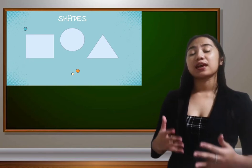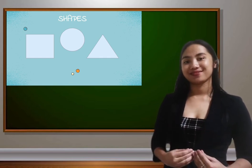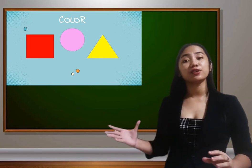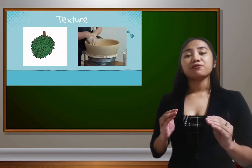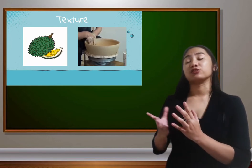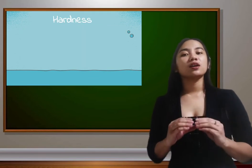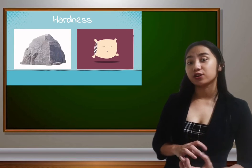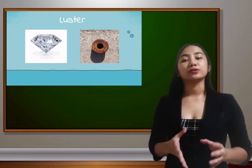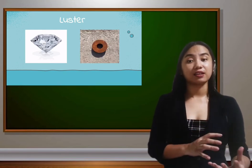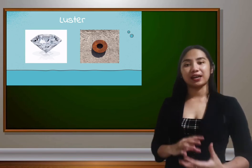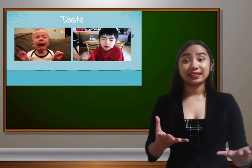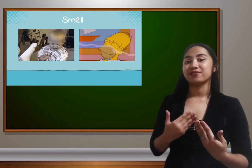When we talk about shapes, we have our basic shapes, and an object can also be irregularly shaped. When we talk about color, we have different colors — it can be pink, green, red, or whatever you observe. When we talk about texture, it refers to how an object feels — it can feel smooth or rough. When we talk about hardness, it refers to how hard it is to bend or change the shape of an object, so it can be hard or soft. Then we have luster, which refers to the ability of an object to reflect light — it can be dull or shiny. Then we also have taste — an object can taste sour, bitter, or sweet — and smell, so an object can have a bad or good smell.